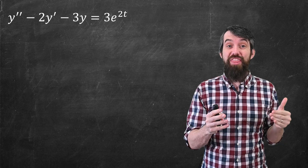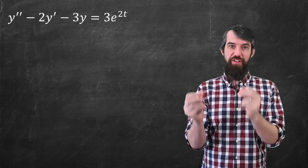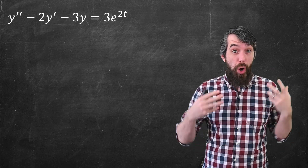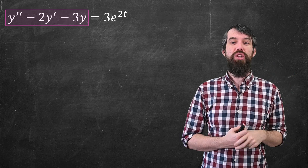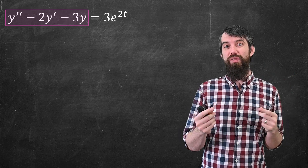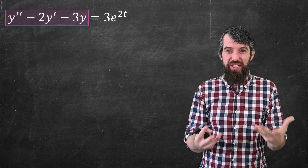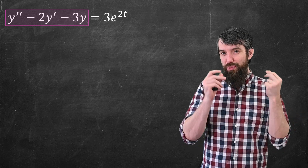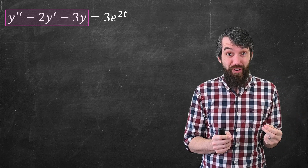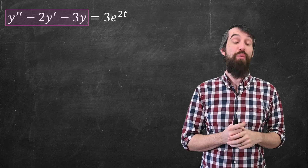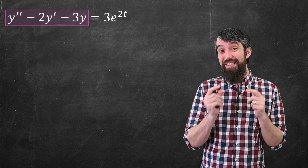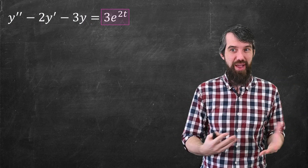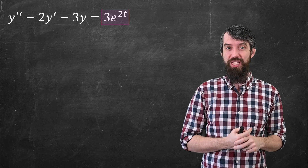In this video, we're going to learn the method of undetermined coefficients. So far in our study of second-order differential equations, we've talked only about constant coefficient differential equations, where the left side has only constant coefficients in front of y, y prime, and y double prime. But when we study constant coefficients thus far, the right-hand side has always been zero — what we call homogeneous. But now I want to figure out how to deal if the right-hand side is not zero, if it's some other function of the independent variable, like 3e to the 2t.